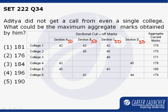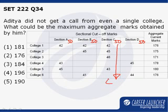Let me suitably make minimum possible reductions in these scores so that I ensure he does not get even a single college call. Section C is the section which has the maximum number of colleges having a cut-off in this particular section, which means that if I bring down my Section C score from 50 to 41, I can ensure that college 1, college 2, college 3, and college 5 do not give him a call.